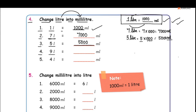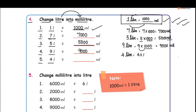9 liters: 1 liter is 1000 ml, so 9 liters is equal to 9 into 1000, which equals 9000 milliliters. Finally, 4 liters: 1 liter is 1000 ml, so 4 liters is equal to 4 into 1000, which equals 4000 milliliters.